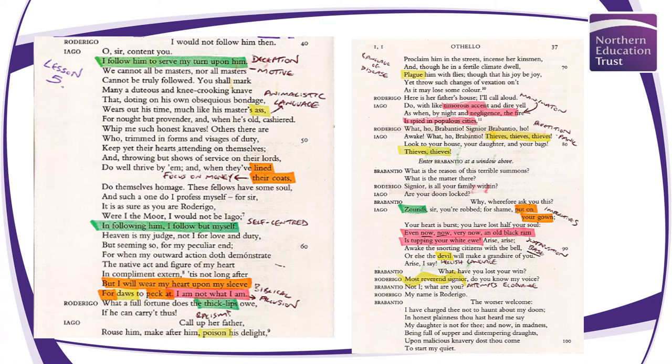Roderigo says, 'I would not follow him then.' And Iago says, 'Oh sir, content you. I follow him to serve my turn upon him.' He's revealing here his inner motives in following Othello — this is a key quotation to learn for the exam. 'I follow him to serve my turn upon him' means the only reason he follows Othello is to serve himself. That's the reveal of his deception straight away. We have no other way to look at Iago than as a pure deceiver.